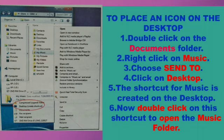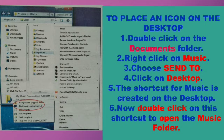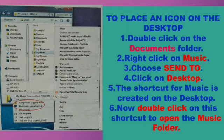To place an icon shortcut on the desktop: Step 1 — double-click on the Documents folder. Step 2 — right-click on the Music folder. Step 3 — choose the 'Send to' option. Step 4 — click on Desktop. Step 5 — a shortcut for Music is created on the desktop. Step 6 — double-click on the shortcut to open the Music folder. I hope you have understood this chapter very well.